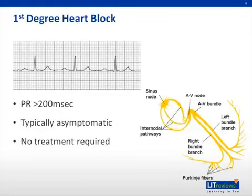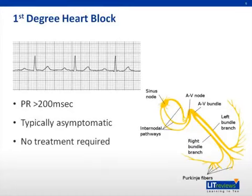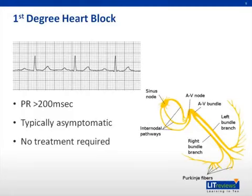First degree heart block is a delayed transmission from the atrium to the ventricles. This will show up as a prolonged PR interval, as this time represents the transmission from the SA node through the AV node to the ventricles. A normal PR interval is 120 to 200 milliseconds in duration. In this EKG, we can see the PR interval is longer than 200 milliseconds, which represents one large box on a standard EKG. The AV node is the most common site, but it can occur in the atrium or even past the AV node. The QRS will have a normal appearance and will always be present.